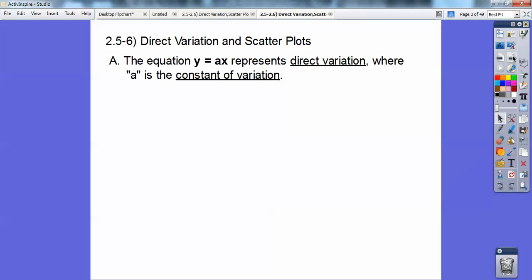This equation, y equals ax, represents direct variation, where a is called the constant of variation. Notice y equals ax is close to y equals mx plus b, but b is 0. Can you see a plus 0 right here? And that's your slope right there. A is your slope right there.